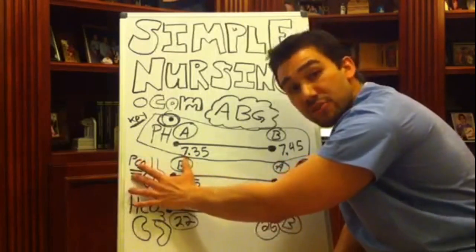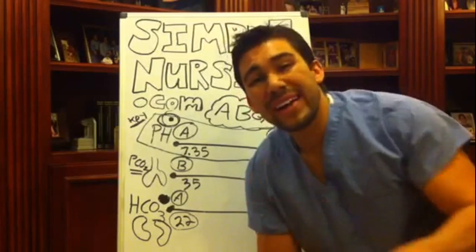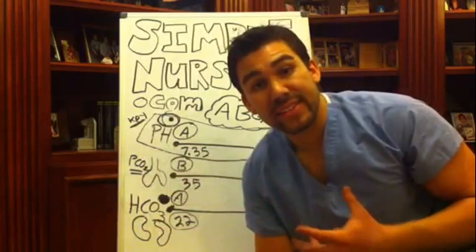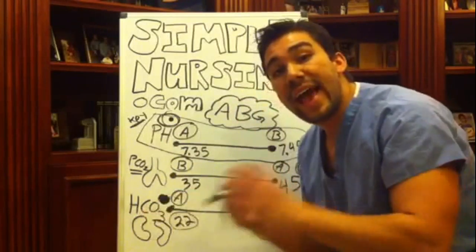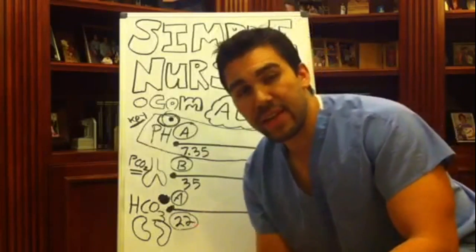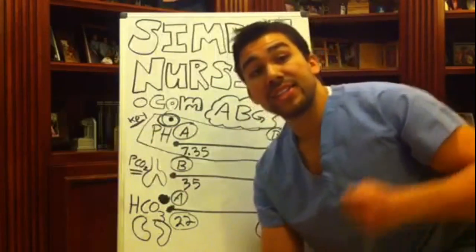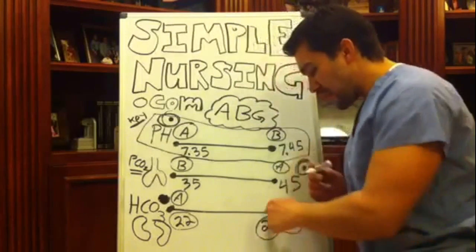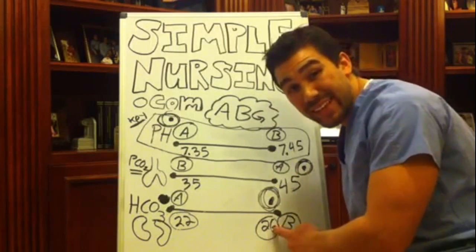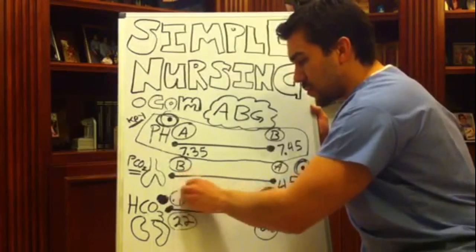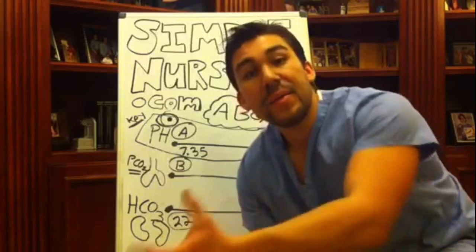Now how do you think the kidneys are going to compensate? Remember, your body doesn't like to be too much of one thing — it likes balance, homeostasis. So your lungs are in an acidotic state, your body is now acidotic because it's holding onto all the carbon dioxide. Your kidneys are going to try to pull back — like tug of war — pulling your body into an alkalotic, basic state. You'll probably find your kidneys somewhere past 26 in the alkalosis area, because you're doing that tug of war pulling the body back into homeostasis.